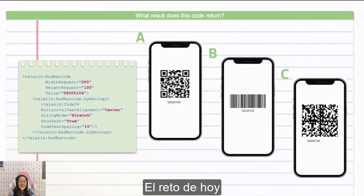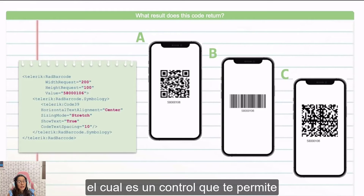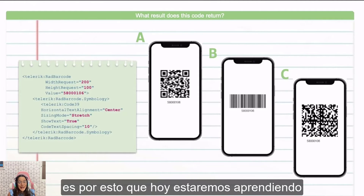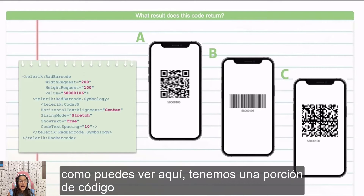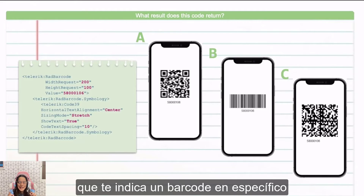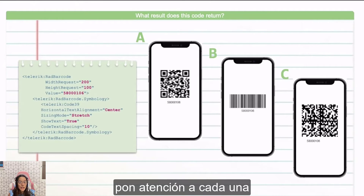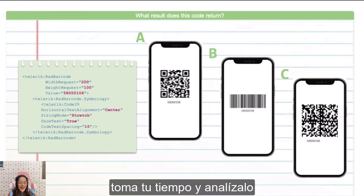The challenge for today is about Telerik's barcode for .NET MAUI, which is a control that allows you to generate and show different types of barcodes. That's why today we will be learning about the different types of barcodes that we have available. As you can see here, we have a portion of code which indicates a specific barcode. We have three different options, so please pay attention to each one of them to identify the right answer that corresponds to this code. Take your time, analyze it, and see you in the next session with the solution.